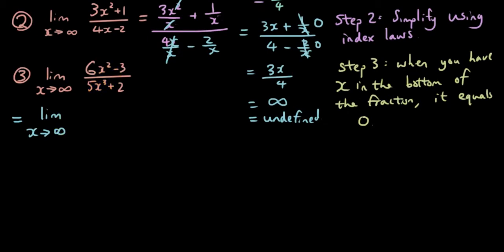So right now we haven't substituted in x equals infinity, so I'm just going to copy down this symbol. So it's 6x² over x³ plus 3, sorry, minus 3 over x³ over 5x³ over x³ plus 2 over x³.